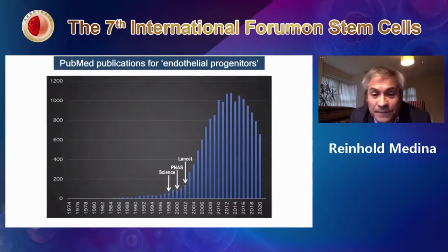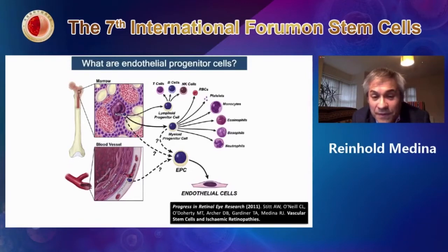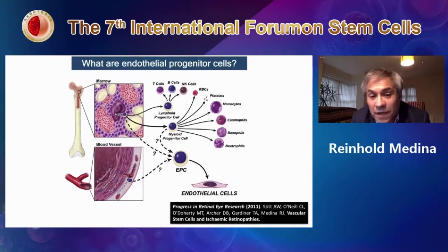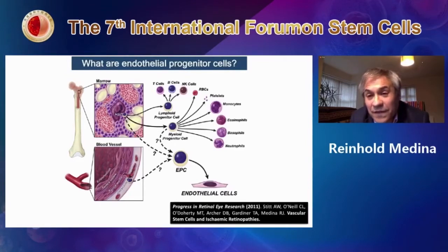What are endothelial progenitors? These are cells that have the capacity to differentiate into endothelial cells — the cells that line our blood vessels. There is debate about their niche. Classically they've been thought to reside in the bone marrow, but more recently there are reports of specific niches in every organ. We and others believe that blood vessels themselves — specifically the adventitia — may be the actual niche for these vascular progenitors. Nevertheless, they definitely circulate in blood, so we can isolate them from peripheral blood.